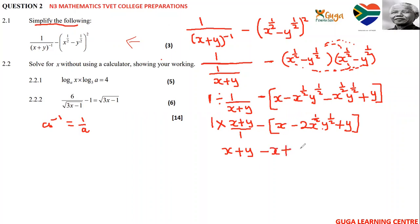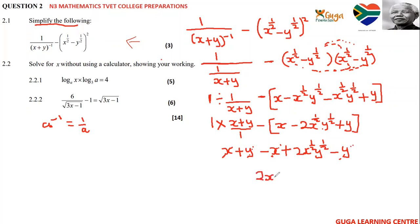Negative and negative gives positive two x to the half, y to the half. Negative and positive gives negative y. Now the like terms: x and x cancel, y and y cancel, so we're left with two x to the half y to the half. Since they share the same exponent, you can put one-half outside. That completes question two.